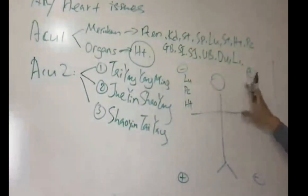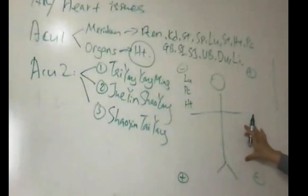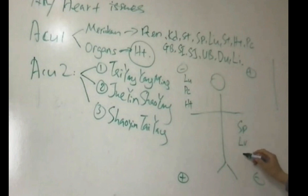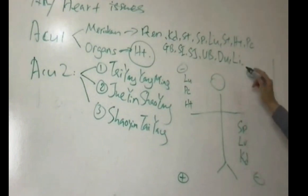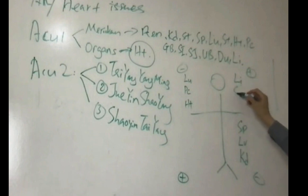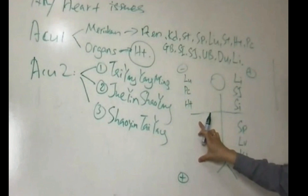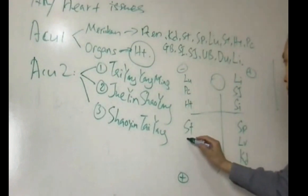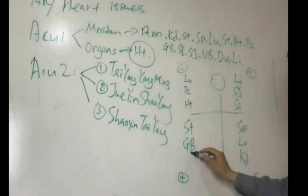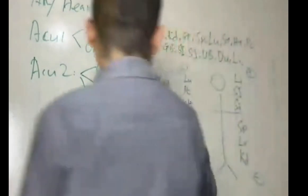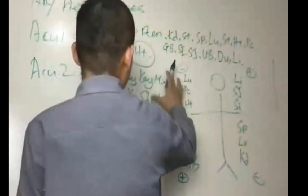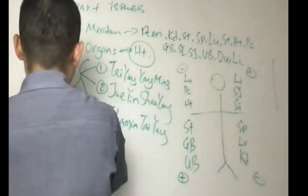Heart. Three foot Yin: spleen, liver, kidney. Three hand Yang: large intestine and small intestine. Three foot Yang: stomach, GB, UB. This is global balance — this is Magical 12. All together they become Magical 12. That's an acupuncture tool. It's not simple.